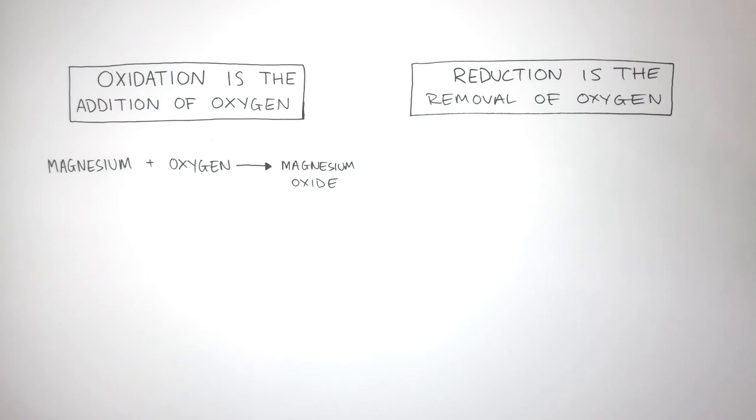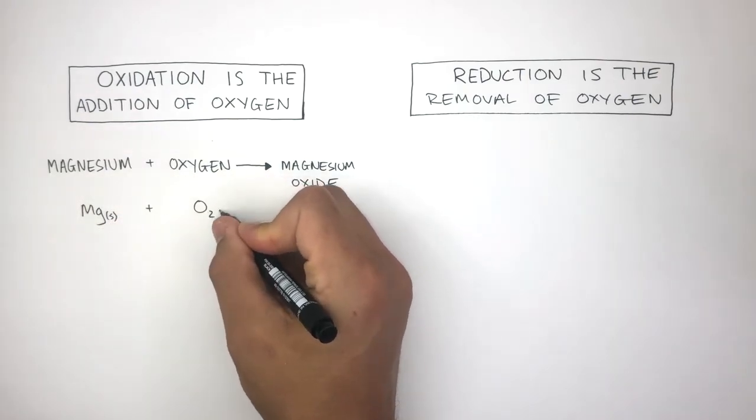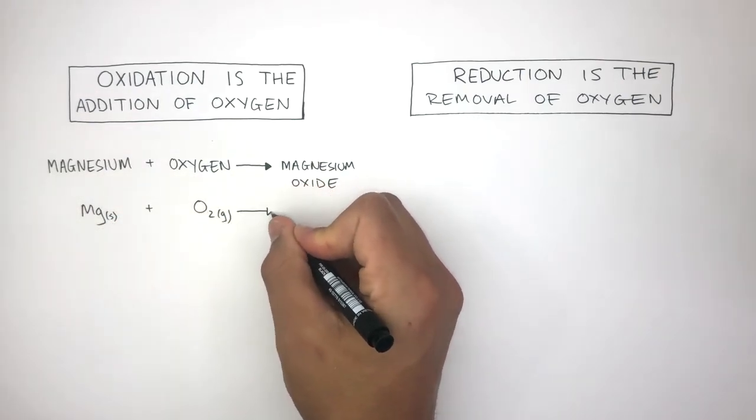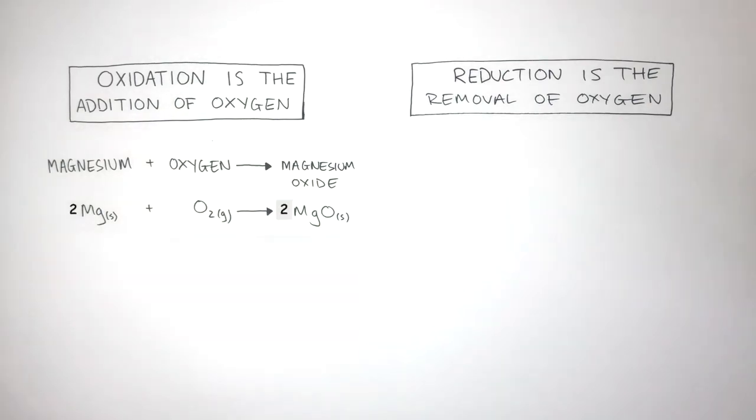The balanced symbol equation is Mg, S for solid, plus O2, G for gas, reacts to form MgO, S for solid. And we put a big two in front of the Mg and a big two in front of the MgO.